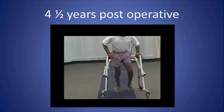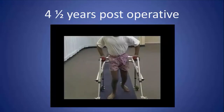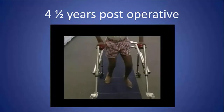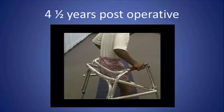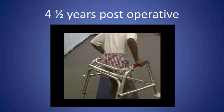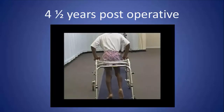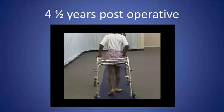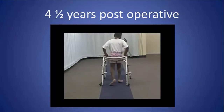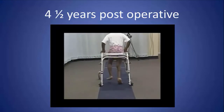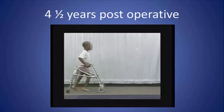Here he is four and a half years later — you can see he's independently walking with the walker for balance. It's now clear that he has developed a jump-type gait with knee flexion and ankle plantar flexion.